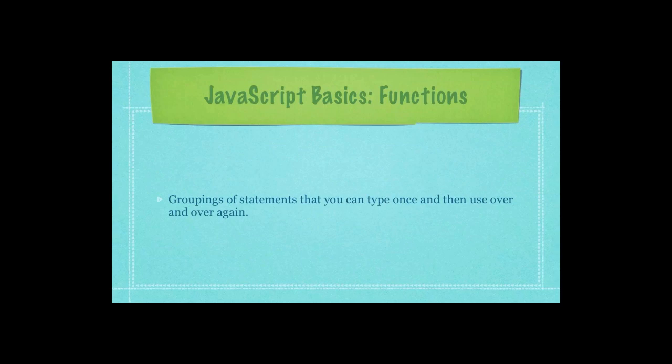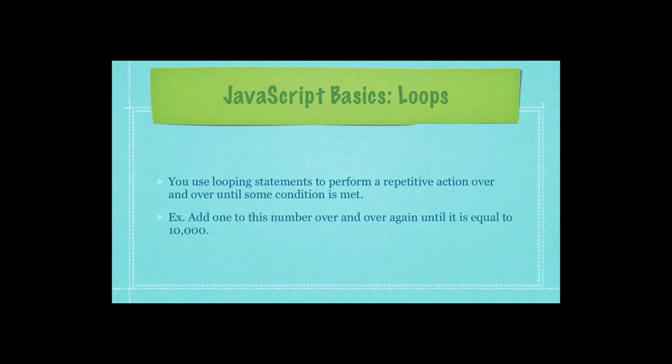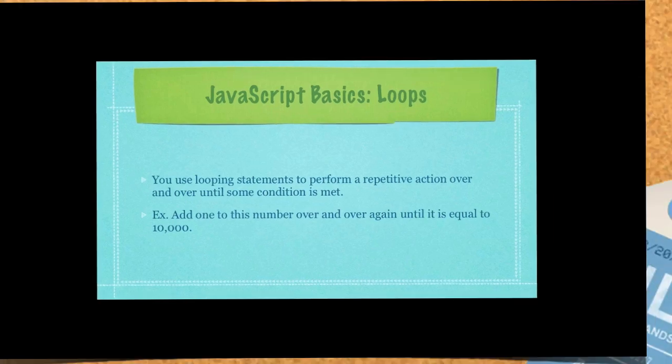Here's some JavaScript basics. What are functions? Functions are groupings of statements that you can type once and then use over and over again. We'll get more into that. What are loops? Use looping statements to perform a repetitive action over and over until some condition is met. Here's an example. Add one to this number over and over again until it is equal to 10,000.